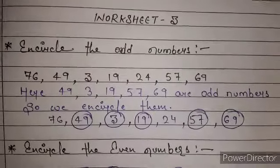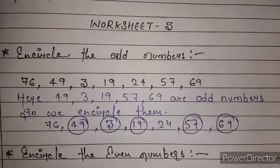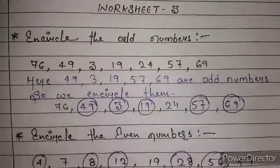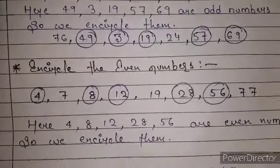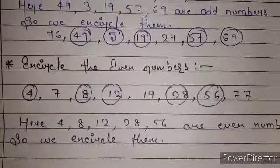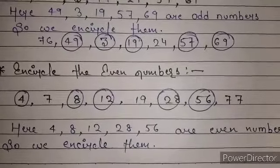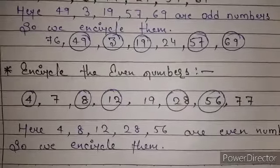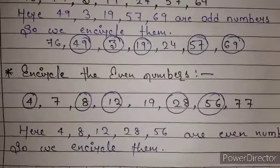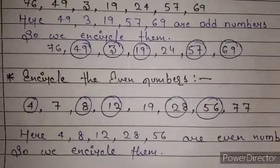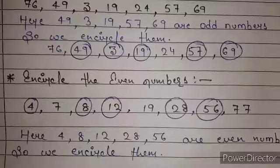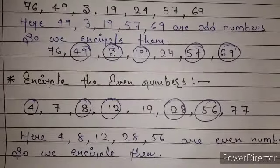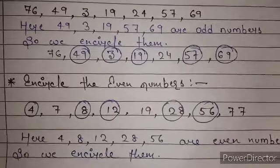Question number 2 is to encircle the event numbers. We know that event numbers are those numbers which are multiples of 2. So among these numbers, 4, 8, 12, 28 and 56 are event numbers because these numbers are divisible by 2, that means they are multiples of 2.